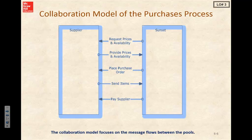We can further modify this model to show our relationship in pools — being Sunset and the supplier. Those would be our different swim lanes here. Notice that we are also showing our message flows with our dashed arrows. These are the messages going back and forth between the supplier and Sunset.